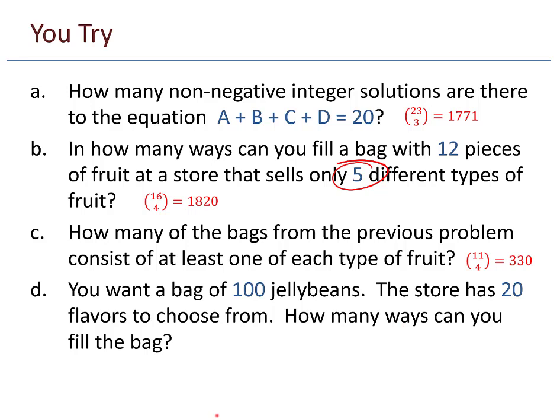Problem D. You want a bag of 100 jelly beans. The store has 20 flavors to choose from. How many ways can you fill the bag? And the solution is 119 choose 19, which is that huge, huge number, which is just fun to put up there again because once again we see in combinatorics these amazing numbers coming out from just 100 jelly beans, and you want to choose 20, but there's 4.9 sextillion ways that you can do this.